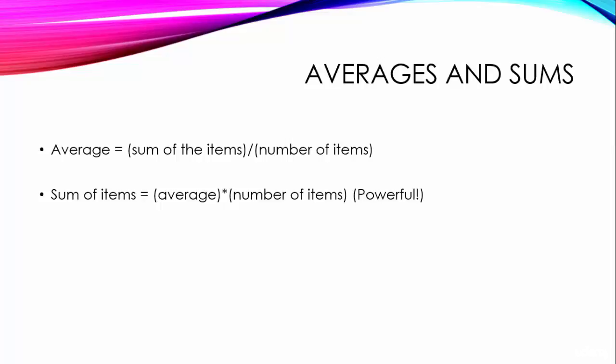This latter form can be powerful. For example, if we add or subtract one item from a set, we can easily figure out how that changes the sum. And that can allow us to calculate the new average. Also, if we are combining two groups of different sizes, we can't add averages. But we can add sums.